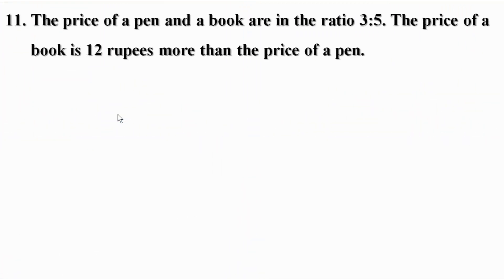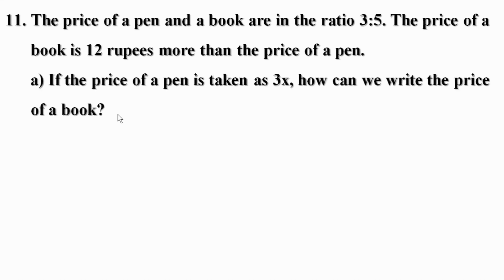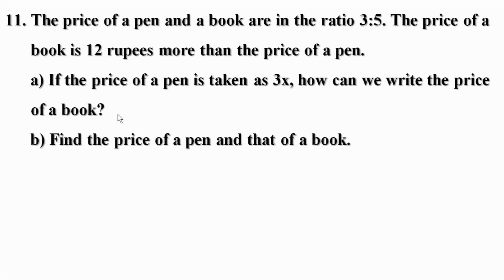Problem 11: The price of a pen and a book are in the ratio 3 to 5. The price of a book is 12 rupees more than the price of a pen. If the price of a pen is taken as 3x, how can we write the price of a book? Find the price of a pen and that of a book.